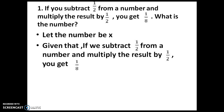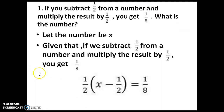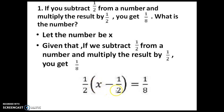Given that if you subtract 1/2 from a number and multiply the result by 1/2, you get 1/8. So this number, let's start with x. Subtract 1/2: x minus 1/2. And multiply the result by 1/2. So x minus 1/2, this result, we are going to multiply by one more 1/2. So it is given: when (x minus 1/2) into 1/2, the answer is 1/8. That is in the LHS. This is how we have to write in the form of a linear equation.